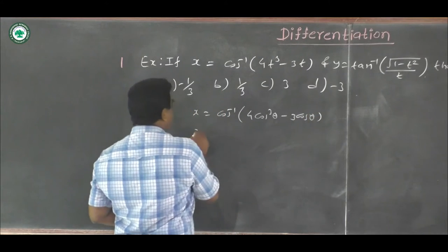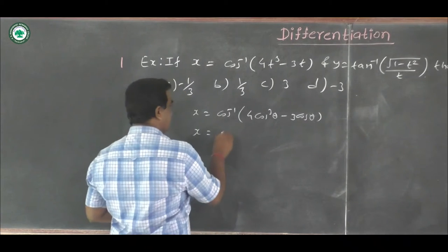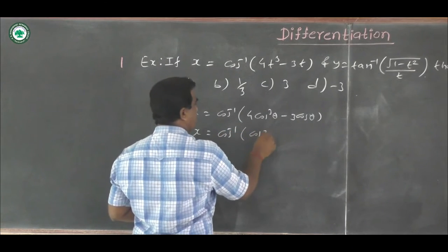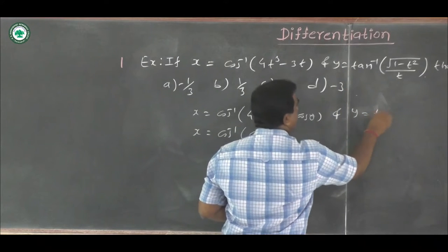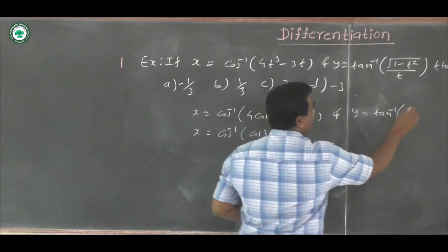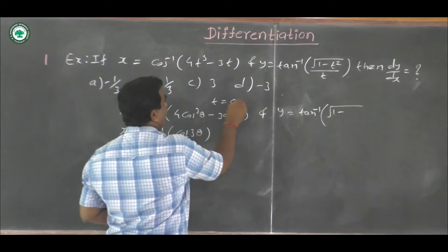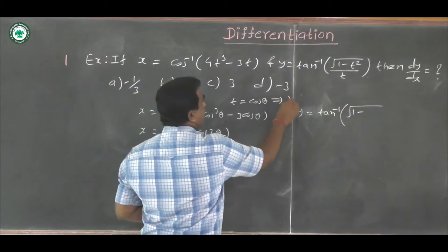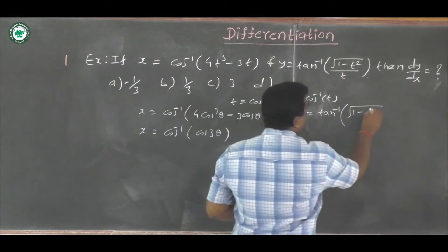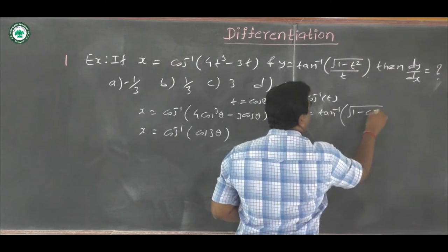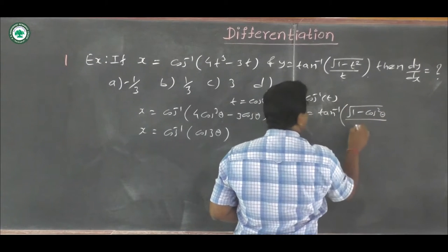We know that 4cos³θ minus 3cosθ equals cos 3θ. Therefore, x simplifies to cos inverse of cos 3θ, which equals 3θ. For y, we also put t equal to cos θ, so t = cosθ implies θ = cos inverse of t.